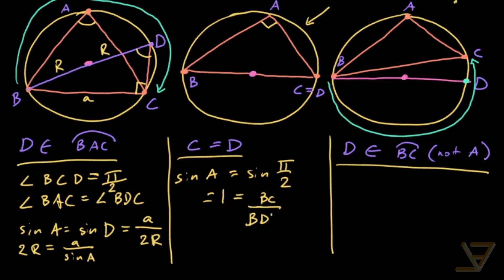Which is equal to BC over BD, because BC and BD are the same length, and that is equal to A over 2R. So once again, 2R is equal to A over sine of A.